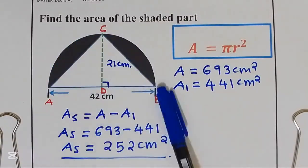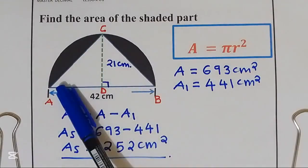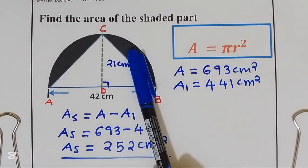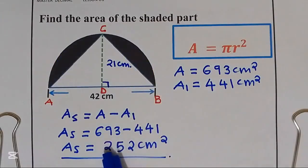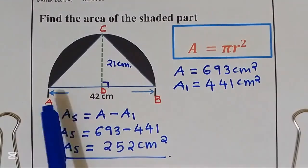I hope you understand how to find the area of this shaded part. We take the area of a semicircle, then we take away the area of the triangle, and we remain with the shaded part which is equal to 252 centimeters squared. For more questions about areas, you can check my playlist over here. Thank you very much for listening — don't forget to subscribe, share, and comment. See you next time, bye bye.